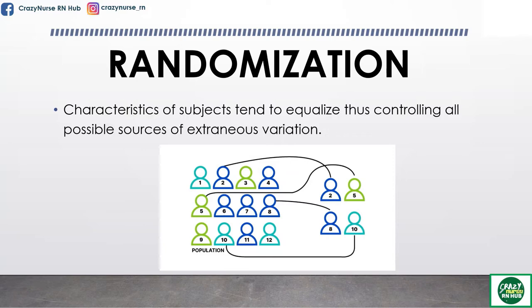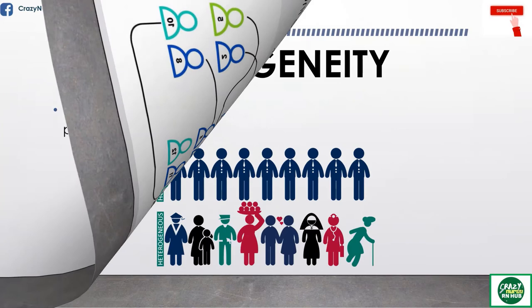For example, if you are interested in assessing the effects of a program of physical exercise training for the elderly, characteristics such as age, gender, and history of smoking, and former occupation could affect the program. These extraneous variables could be controlled by randomization.